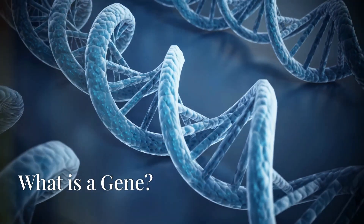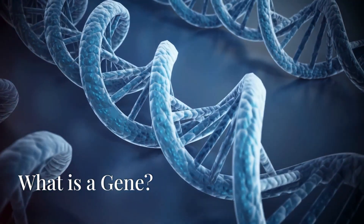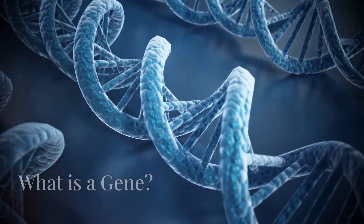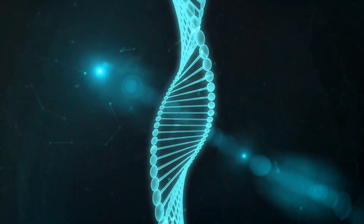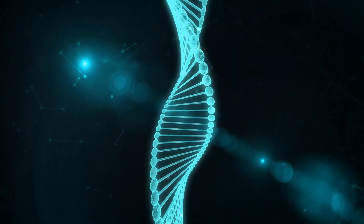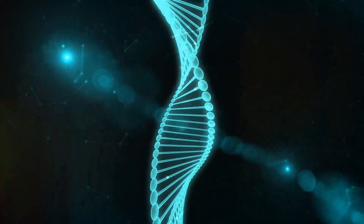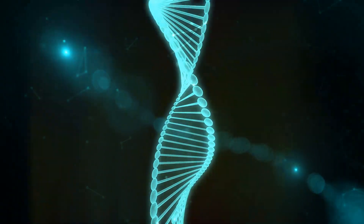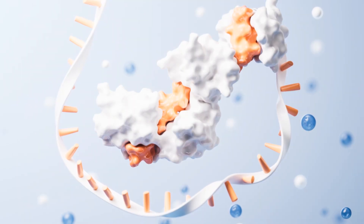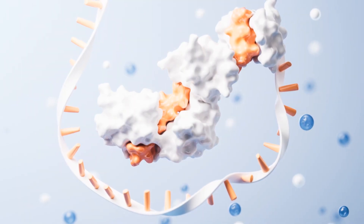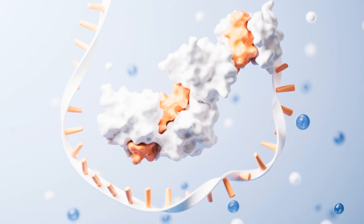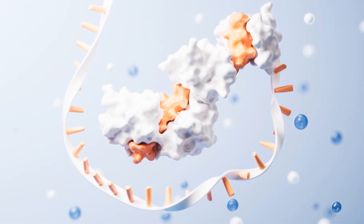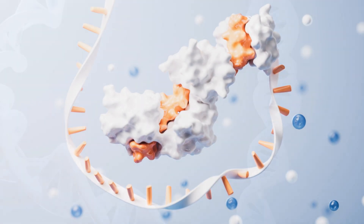What is a gene? A gene is the basic unit of heredity in living organisms. It is made up of DNA, or deoxyribonucleic acid, and carries the instructions essential for an organism's growth, development, reproduction, and survival.